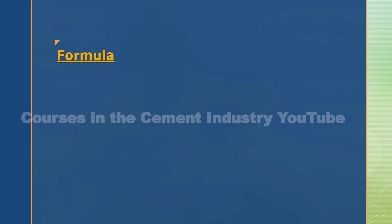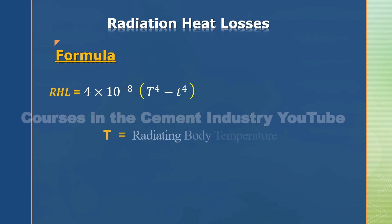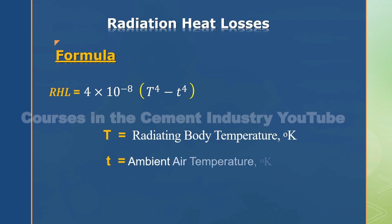Formula for radiation heat losses: RHL equals — where T equals radiating body temperature, and T equals ambient air temperature.